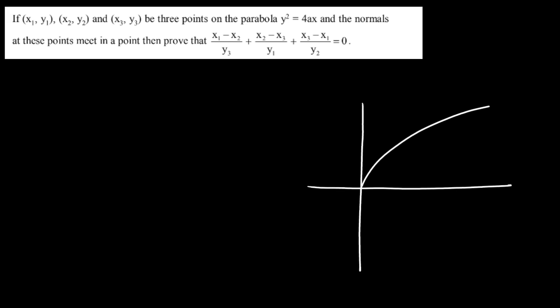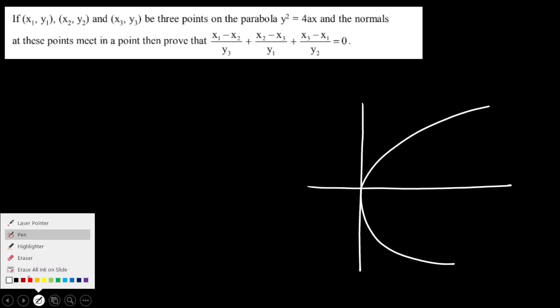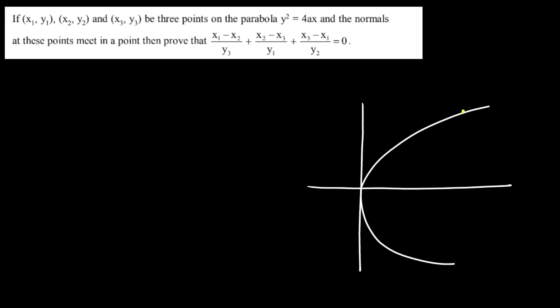I'm going to start with the equation of the parabola y² = 4x and sketch it. Now I'm going to select any three points on this parabola randomly. Let's say point A is (x1, y1), point B is (x2, y2), and point C is (x3, y3).